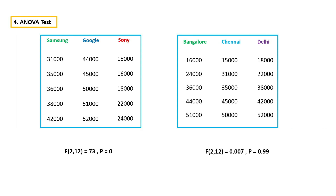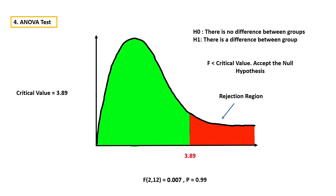If you calculate F-score for the location feature, this will be your output. In this case, the F-score will approximately come here. As you can see, the F-score is lesser than the critical value, so we can't reject the null hypothesis. The result will be there is not much difference between groups, so we can conclude that this feature is not important. If you are interested in the p-value, which is the total area to the right of this point, obviously the entire area comes after this point. That is why the p-value is 0.99.